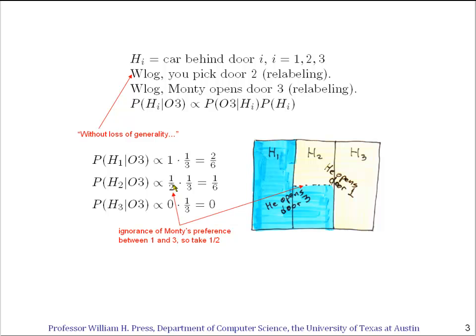Now, if the car is behind door 3 — that's hypothesis 3 — then the probability that Monty will open door 3 is 0, so we put a 0 here. Multiplying these out across each row, we get 2/6 for H1, 1/6 for H2, and 0 for H3.